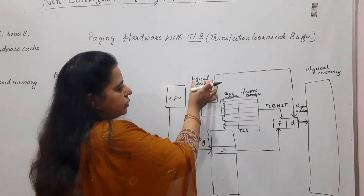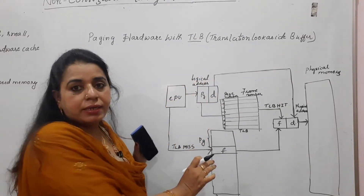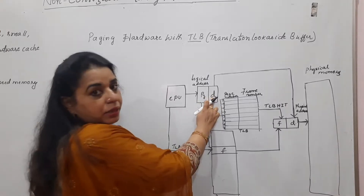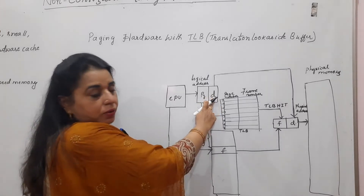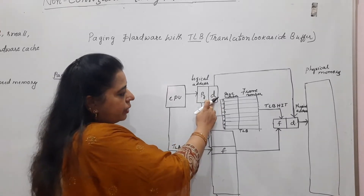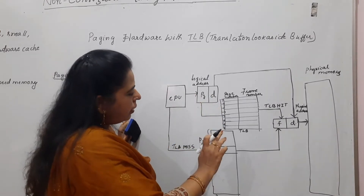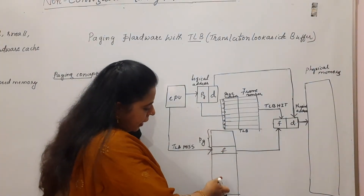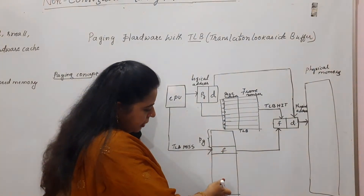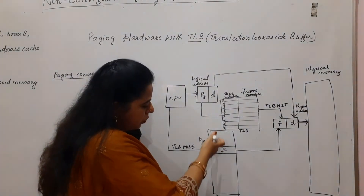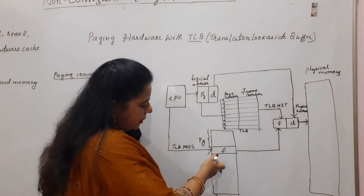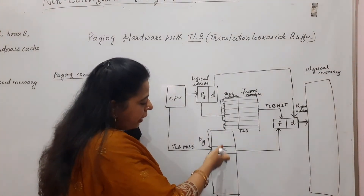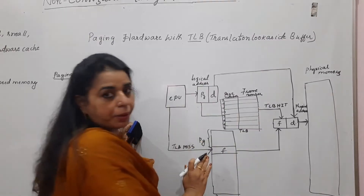The CPU generates a logical address, which consists of a page number and the offset. What is done here is that whatever entries are in the page table — the most frequently accessed locations — that information is stored in the TLB.